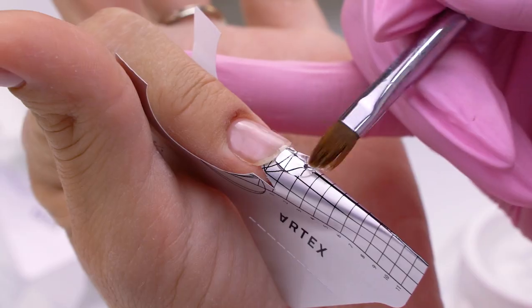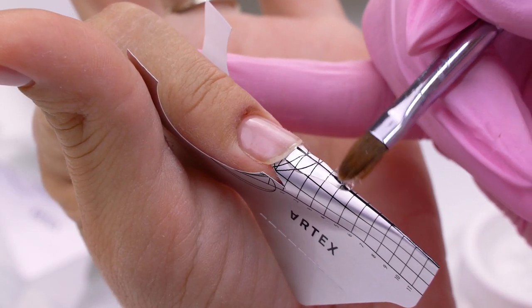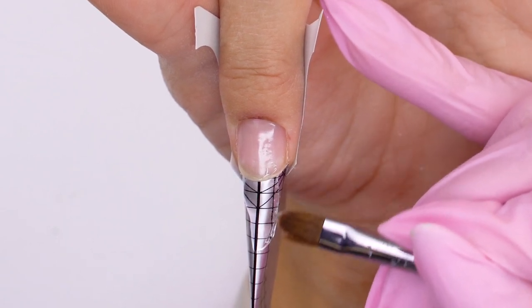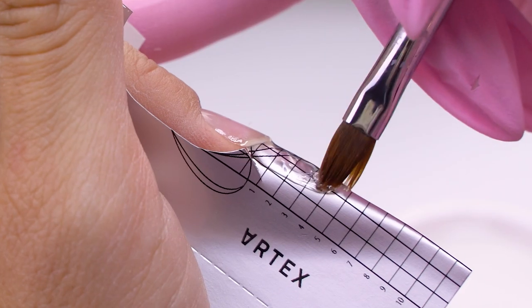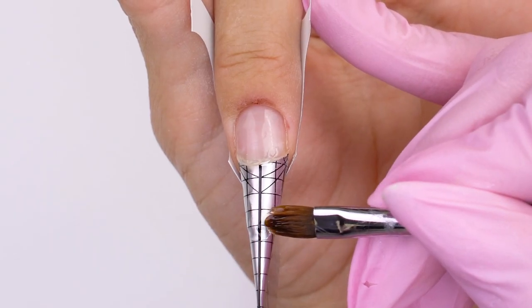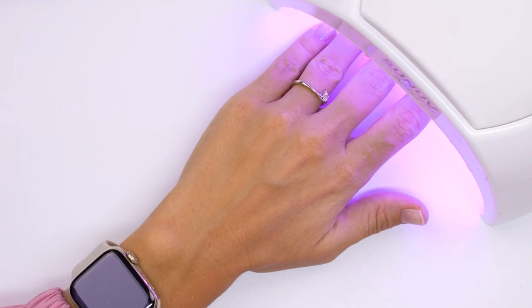I will use this clear gel for the underlay. I form the length I need and lay out the side walls. From the side view there should be a straight line and a smooth lift to the free edge. Many techs mistakenly form a straight line right from the stress point.